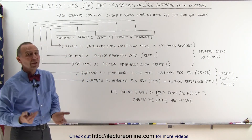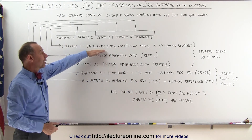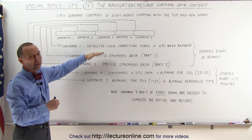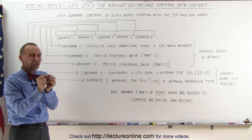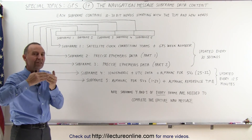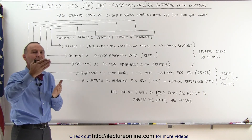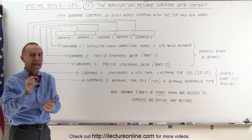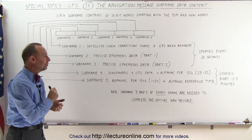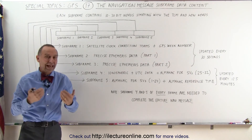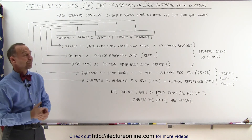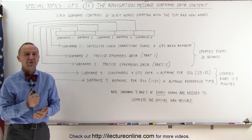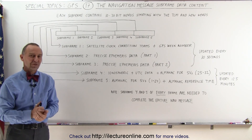We can't wait 12 and a half minutes for corrections on the clock; we need that updated every 30 seconds, because after 30 seconds the correction will deviate from the true correction, and therefore must be updated every 30 seconds to keep very accurate position information as the receiver gets data from the satellite. Hence, the structure of the content of the subframes of the navigation message.